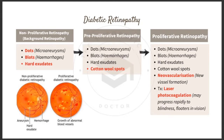For diabetic retinopathy, there are three types: non-proliferative (background) retinopathy, pre-proliferative retinopathy, and proliferative retinopathy. In non-proliferative retinopathy, you see dots, blots, and hard exudates — dots represent micro-aneurysms, blots represent hemorrhages, and hard exudates are also present. These findings are present across all stages.